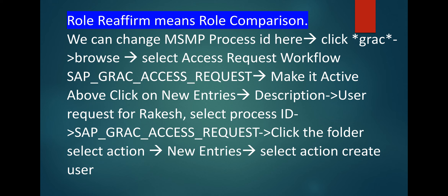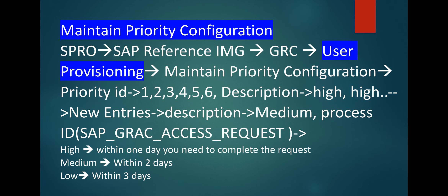The role is given here — make it active. Click on new entries, then description 'User Request', for username select process ID, select access request ID, click the folder selection, then new entry, select action 'Create User'.